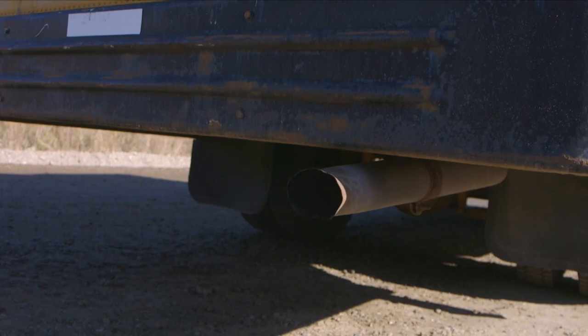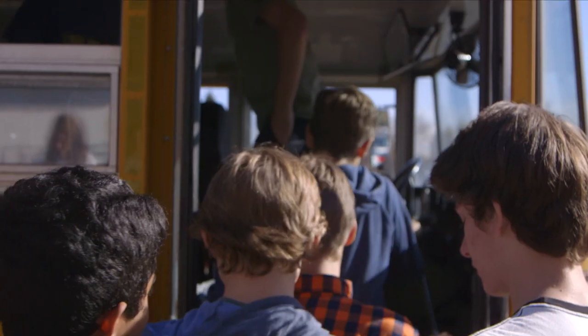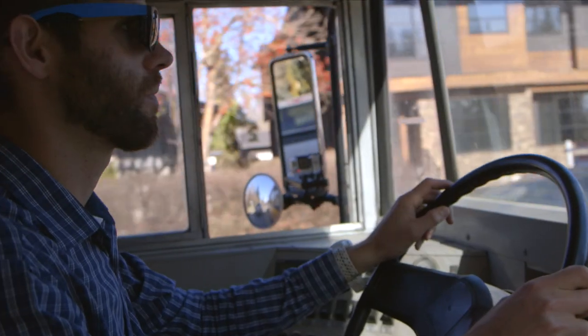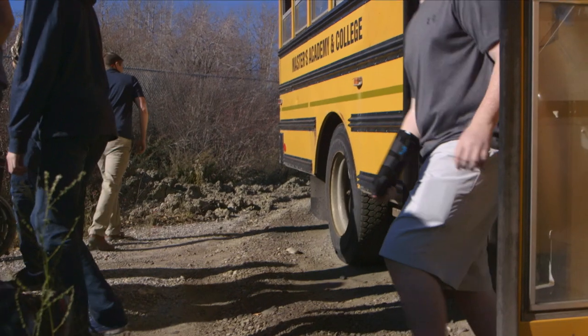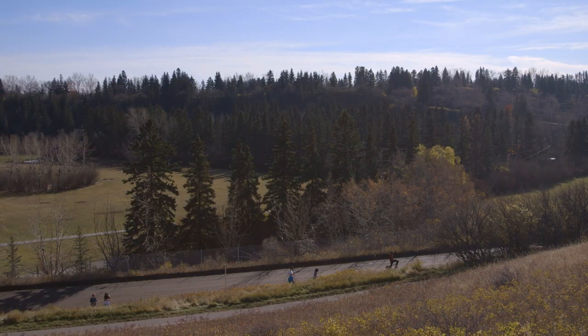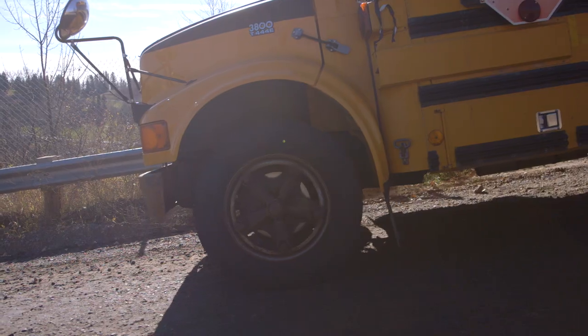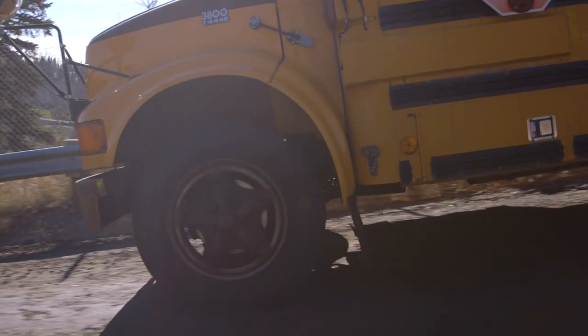One of our first experiments was figuring out what type of characteristics the bus has. We got all the kids on the bus and went to an area called Sandy Beach where there's a really big hill. We had all the kids line up down the side of the hill with timers, set the bus at the top with the parking brake on, then released the parking brake and the bus started rolling down the hill due to its gravitational potential energy.